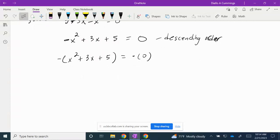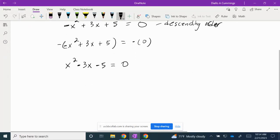So here I'm multiplying both sides by a negative. A negative times -x² is positive x². A negative times positive 3x is -3x. A negative times positive 5 is -5. And zero is neither negative nor positive. So we now have x² - 3x - 5 = 0.